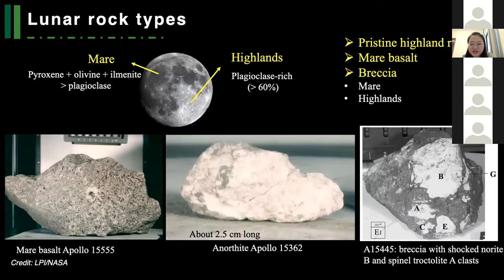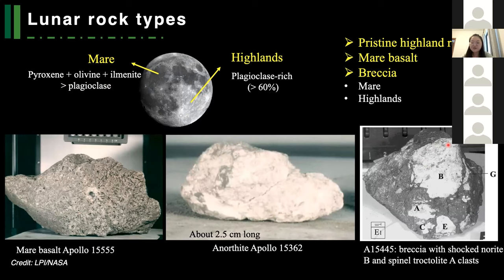Both returned samples and meteorites have advantages and disadvantages. If we want to conduct a comprehensive study on lunar petrology, we'd better combine them together. Thanks to returned samples, we can assign different rock types to terrains on the moon. The mare, which is dark, is mostly composed of mare basalt — the major minerals are pyroxene, olivine, and ilmenite, and they contain less plagioclase than highlands. Highlands are plagioclase-rich, composed mostly of anorthosite. Both mare and highland areas also have many breccias — brecciated rocks formed when impacts break apart pristine rocks and glue them together.